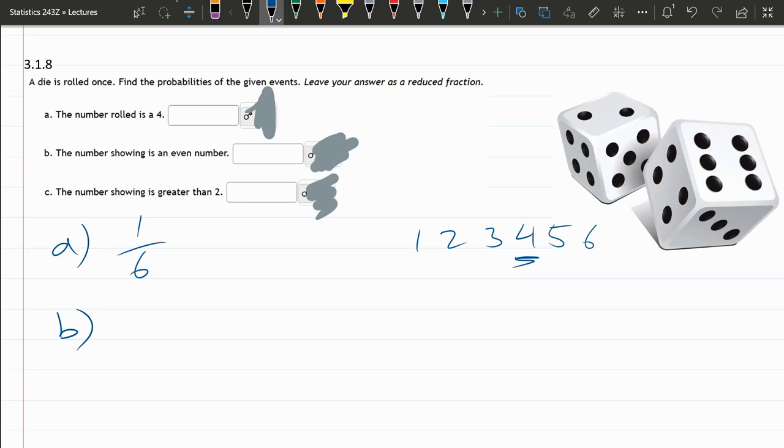All right, part B. The number showing is an even number. Well, 4 is even, 2 is even, 6 is even. So, there's 3 favorable outcomes, or 3 even numbers, 6 total, reducing to 1 half. You could also think 1 to 6, half the numbers are even, so the probability is 1 half.